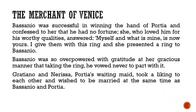In Belmont, Bassanio was successful in winning the hand of Portia. He confessed to her that he did not have enough money, but Portia did not love him for his money — she loved him for his worthy qualities, and she said, 'Myself and what is mine is now yours.' She presented a ring to Bassanio, and he was so overwhelmed that he vowed he would never part with it. Gratiano and Nerissa, who was Portia's maid, also began to like each other and wished to marry at the same time as Bassanio and Portia.